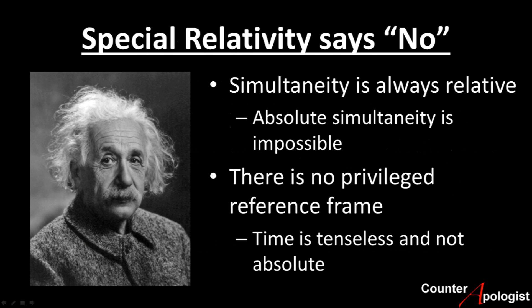The problem here is that Einstein's special relativity provides very strong evidence that the simultaneity of events is always relative, and that absolute simultaneity is impossible. It actually also shows that time is tenseless, since there is no privileged reference frame that would make time absolute.